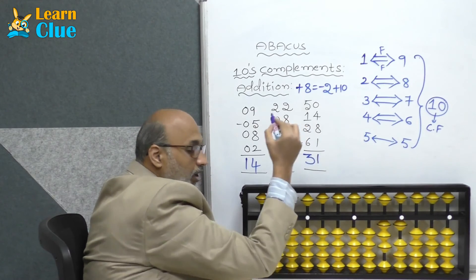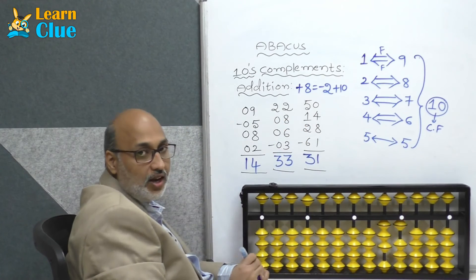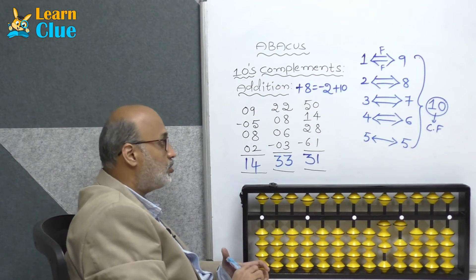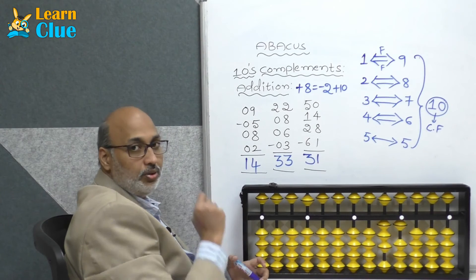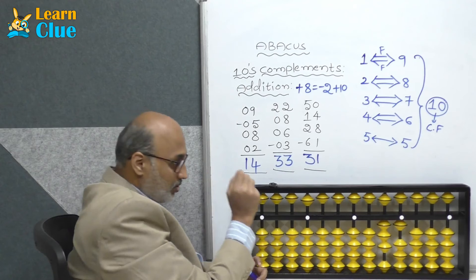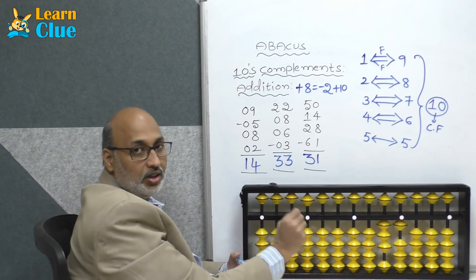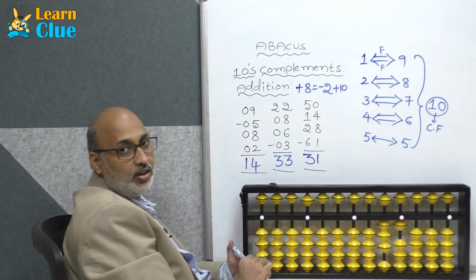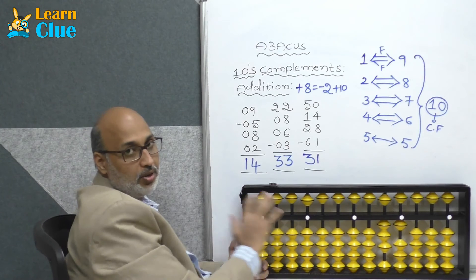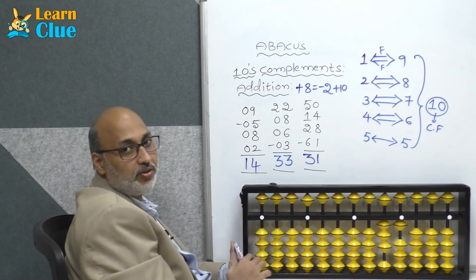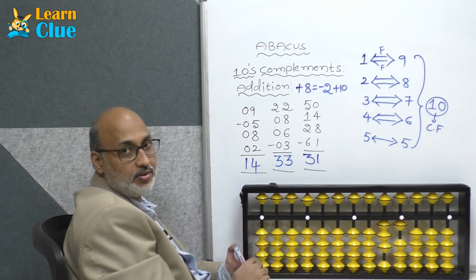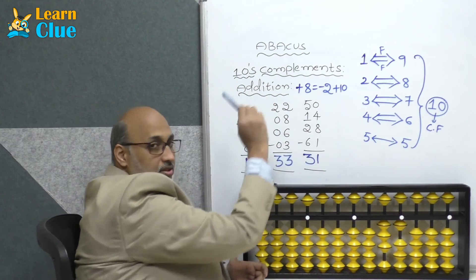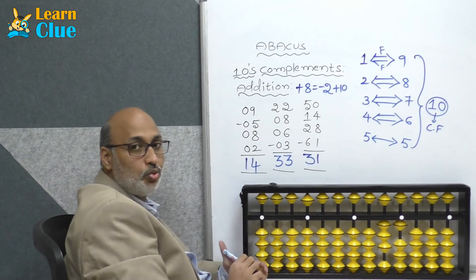What is the answer? 31 is the answer. Always, as I told you, you have to see, observe, think, and place the correct technique on the abacus — then you will get the perfect answer. Always remember the techniques, which is quite important.